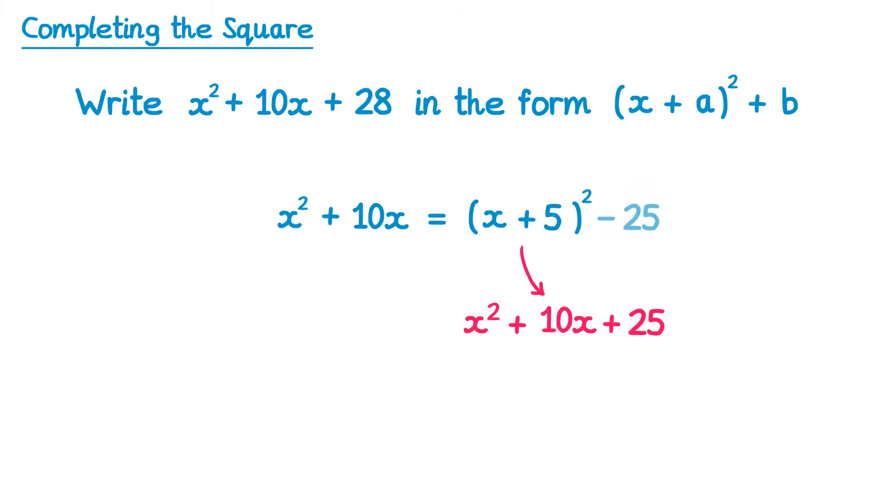So what we do is we write negative 25 at the end, to cancel out the 25 that would come from the bracket. What's written here now is technically correct. x squared plus 10x is equal to x plus 5 all squared, and then take away the 25.